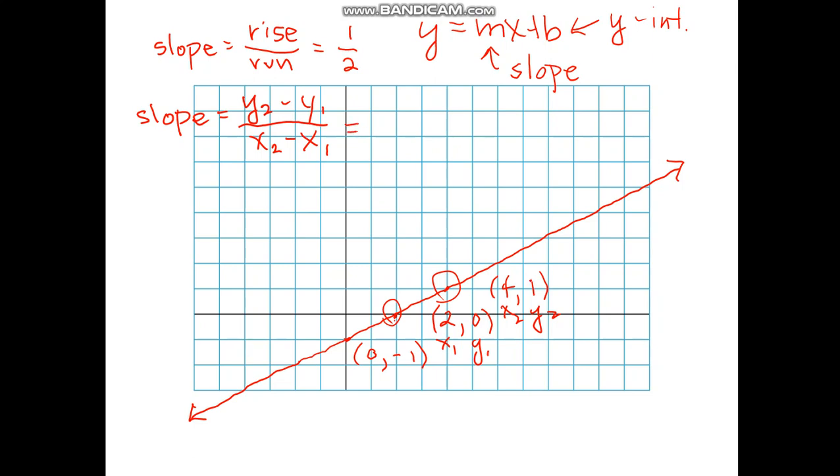So y2 is equal to 1 minus y1 is equal to 0, x2 is equal to 4, x1 here is equal to 2, and I get 1 half.